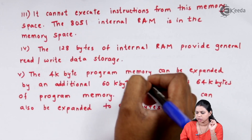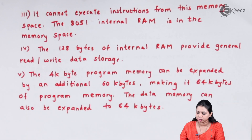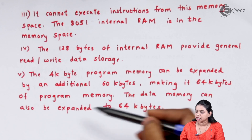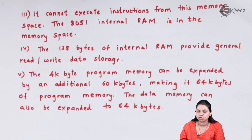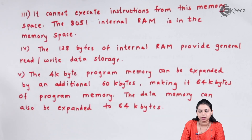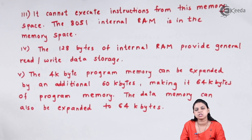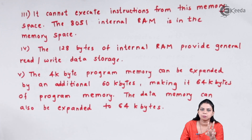The 4KB program memory can be expanded by an additional 60KB, making it 64KB of program memory. Similarly, the data memory can also be expanded to 64KB. So the 8051 can address up to 64KB of program memory and up to 64KB of data memory, as two separate memory spaces.